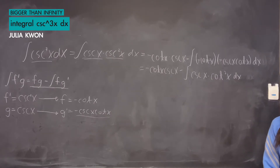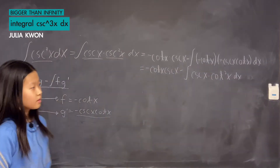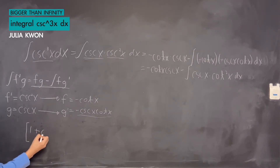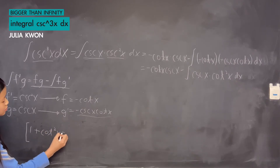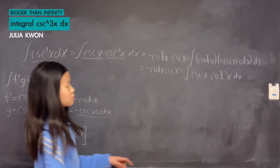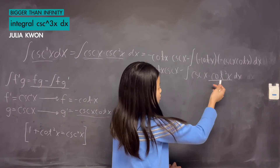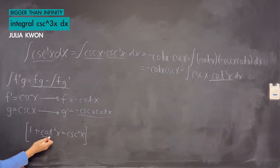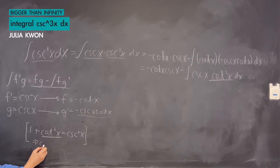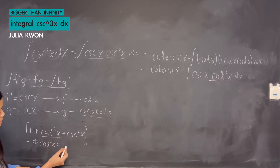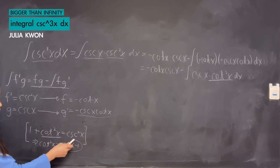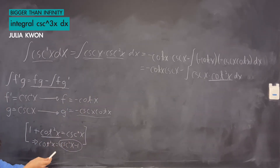We're going to use the Pythagorean identities. One of the Pythagorean identities is one plus cotangent squared x equals cosecant squared x. We're going to replace cotangent squared x, solving for it as cosecant squared x minus 1.